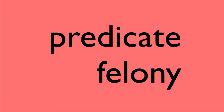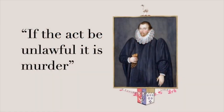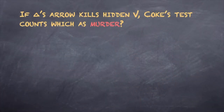In the understanding of the rule that had come down traditionally, the predicate felony might be any felony whatever. In the words of the eminent Sir Edward Coke's Institutes of the Laws of England, published in the 17th century: if the act be unlawful, it is murder. The implications of Coke's simple formula can be illustrated this way. We ask: if the defendant's arrow kills a hidden victim, which of the following cases does Coke's test count as murder?